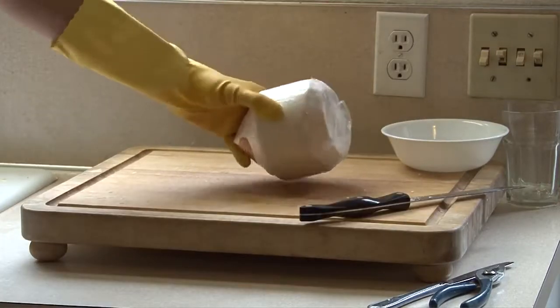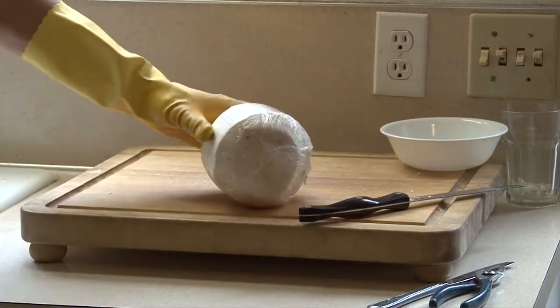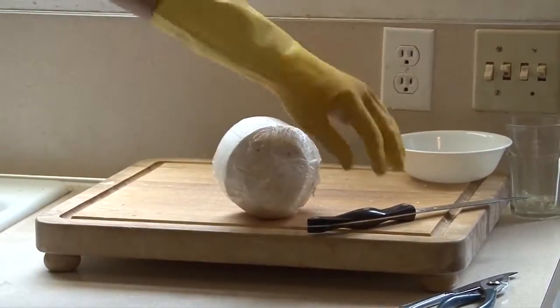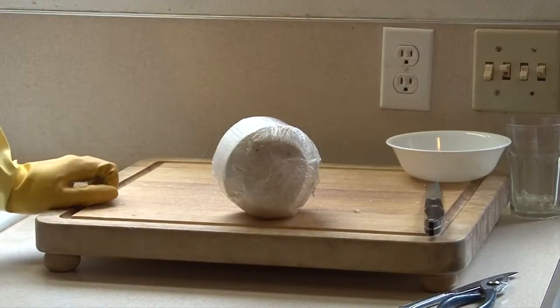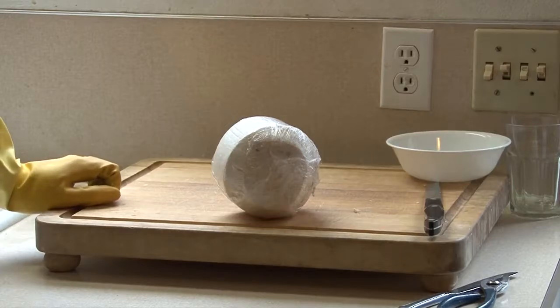When you buy a Thai coconut you'll know that it's wrapped in cellophane. You want to keep the cellophane there as you cut the coconut and you want to wear gloves and the reason is that these coconuts are dipped in formaldehyde to preserve them.